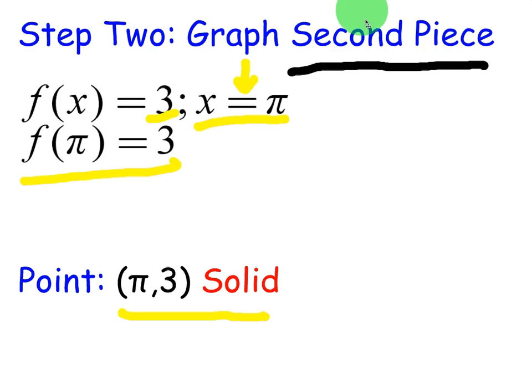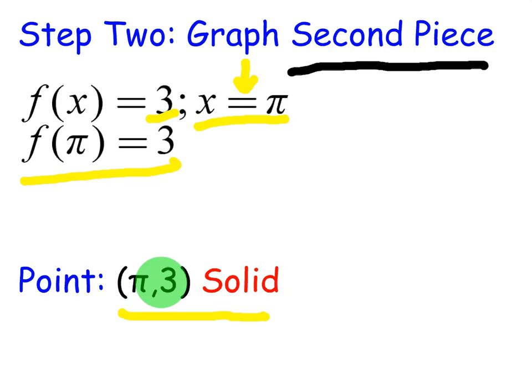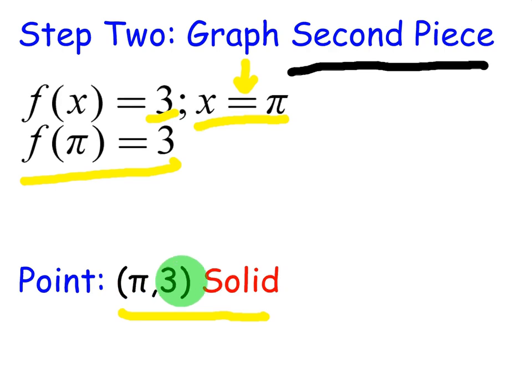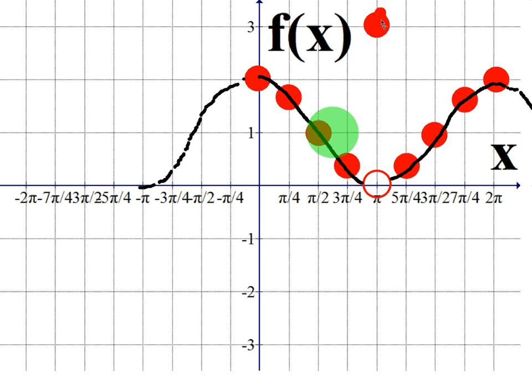Now I'm going to graph my second piece, which was on the bottom. It said f of x was 3 whenever x was equal to π, so I know there's going to be a point at π comma 3. And just to refresh your memory, that's what that bottom piece looked like. So at π over 3, I'm actually going to place this, I'm going to place this solid point up here, at π comma 3. And so, no, it did not fill in the hole this time.